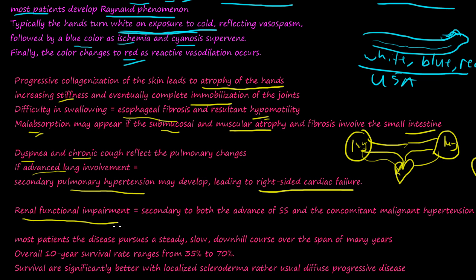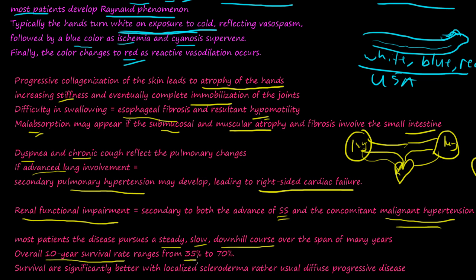Renal functional impairment is probably due to both secondary events and advancement of systemic sclerosis — hardening of the kidneys plus malignant hypertension. Most patients' disease pursues a steady, slow downhill course over the span of many years. The overall 10-year survival rate is 35% to 70%, and survival is significantly better with localized scleroderma rather than diffuse scleroderma.